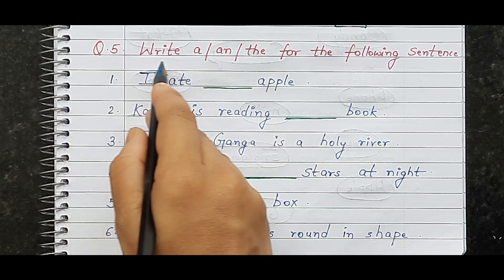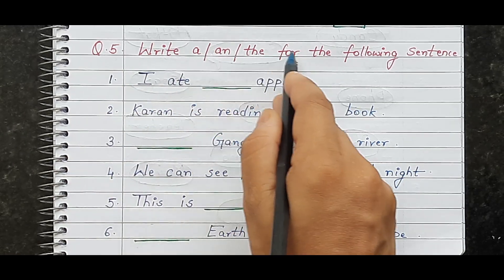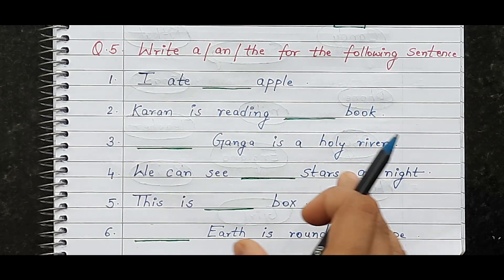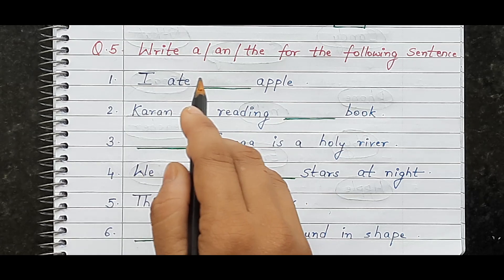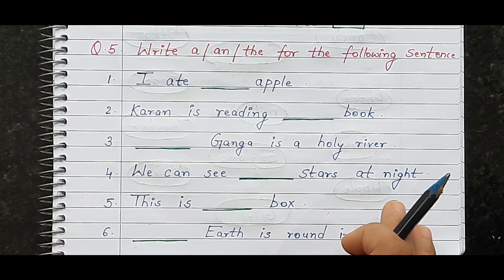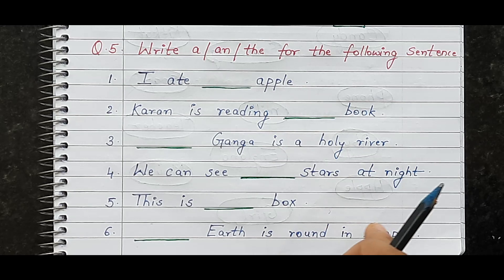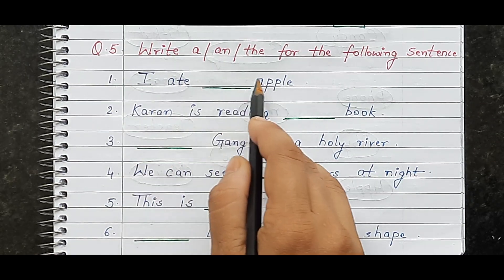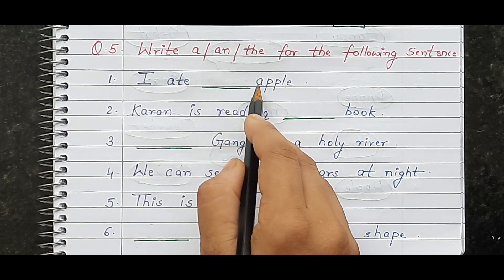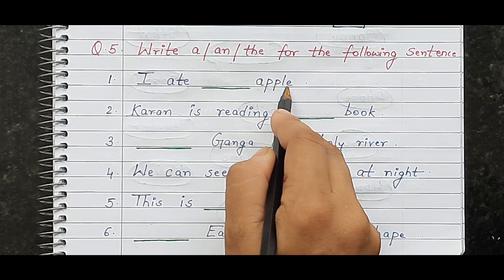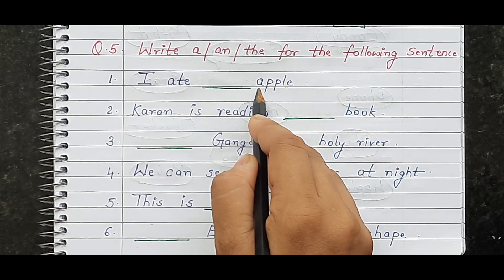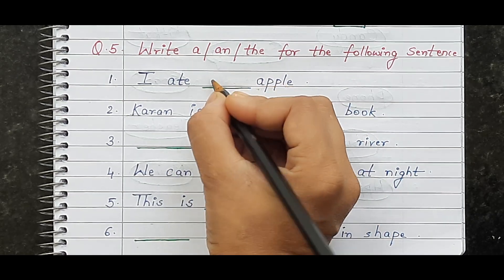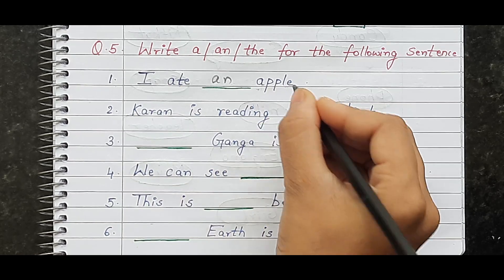Here is the next question: write 'a,' 'an,' or 'the' for the following sentences. The children have to understand which article fits in each sentence. The first question is 'I ate dash apple.' The word 'apple' starts with the letter A, which is a vowel. When a word starts with a vowel, we use 'an.' So: 'I ate an apple.'